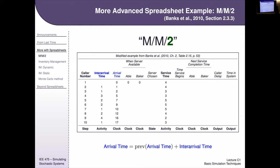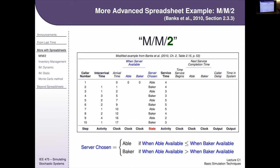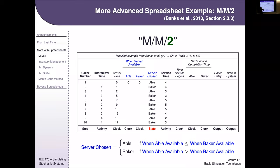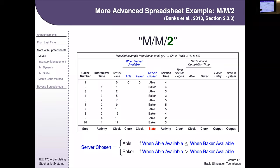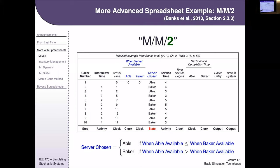Arrival time works exactly as before — the next arrival time is always the previous arrival time plus the inter-arrival time. The service begin time uses a max of the arrival time and the minimum of when Able or Baker is available. The max is what implements the delay if the customer arrives before the servers are free, or no delay if they arrive after the servers become available.